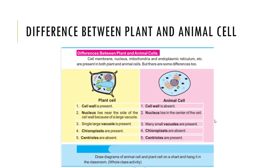Now, the difference between plant and animal cell. Cell membrane, nucleus, mitochondria, and endoplasmic reticulum are present in both plant and animal cells, but there are some differences too.